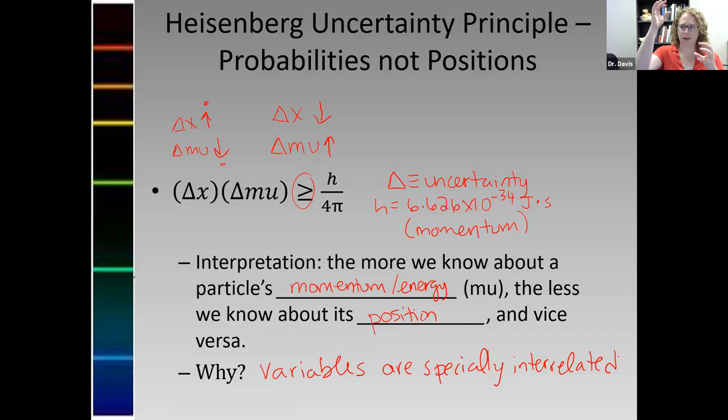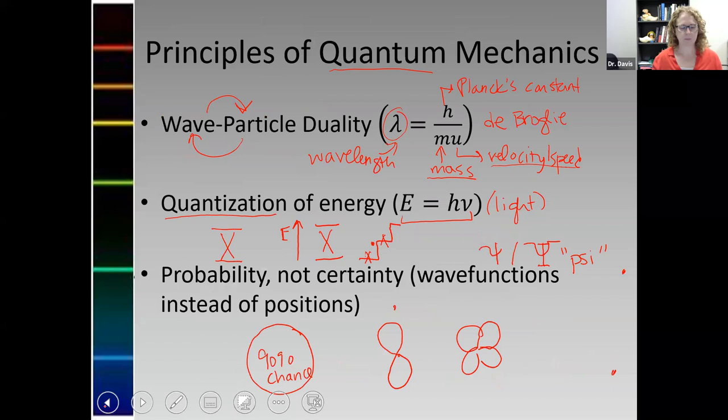Again, those are the principles of quantum mechanics. Going back, wave particle duality, quantization, and probability, not certainty. Those are the things that you need to keep in mind as we learn more about atomic structure, because these principles are going to underlay everything you see going forward. Thank you very much.